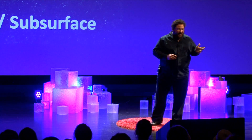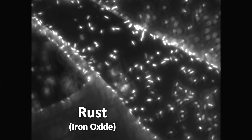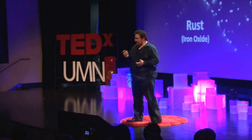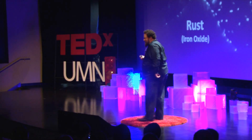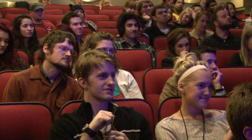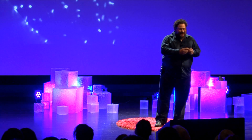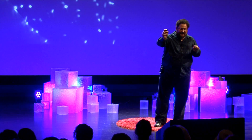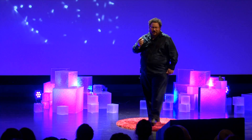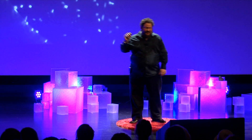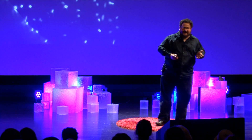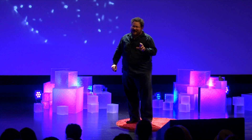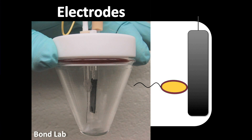One of the microbes my lab studies uses rust. These bacteria take the electrons they generate from food and breathe rust, just like we breathe oxygen — though I don't recommend breathing rust. These bacteria have a pathway for moving electrons from inside the cell all the way to the outside, where an insoluble substrate much bigger than they are exists. This ability to move electrons from inside to outside the cell allows us to do some really fun things, such as growing them on electrodes.